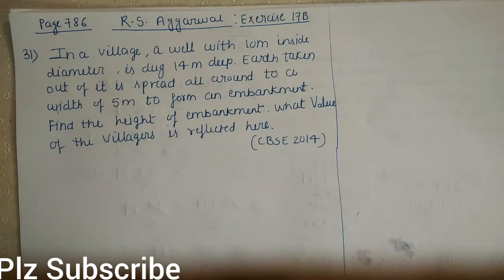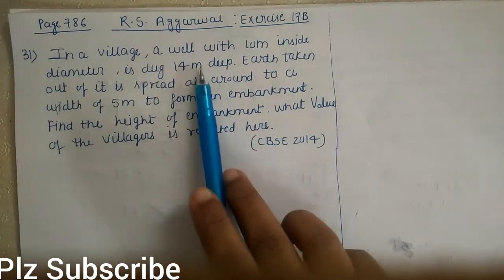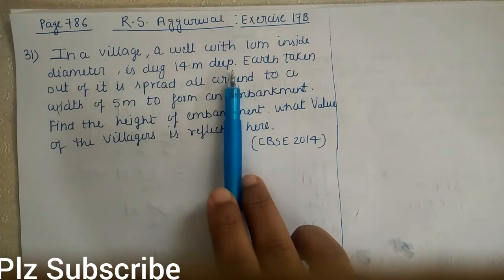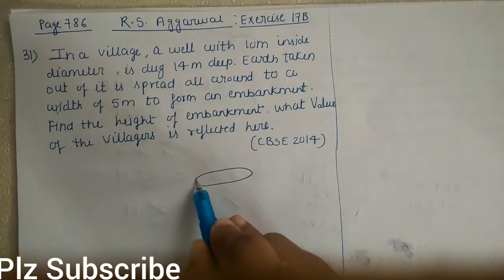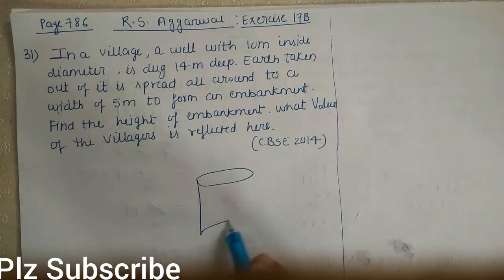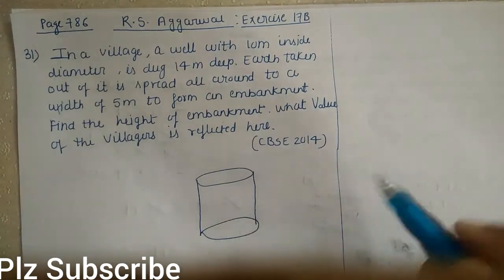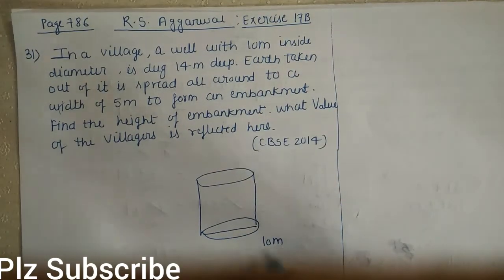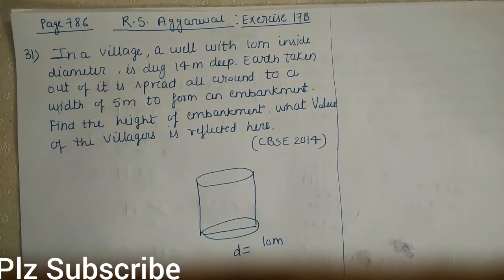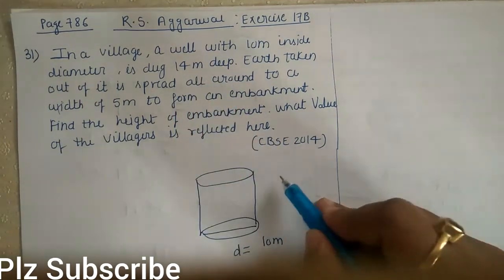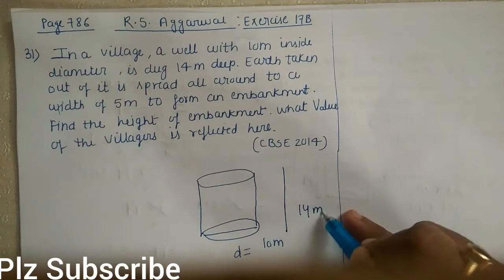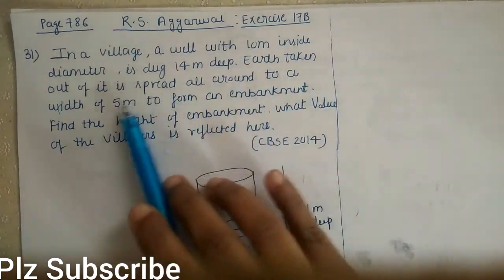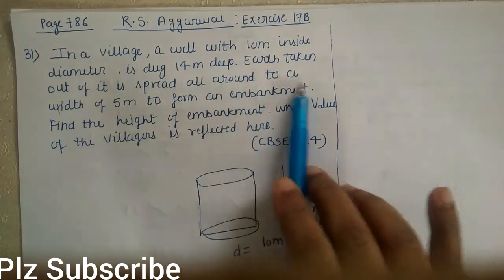Question number 31: In a village, a well with 10 meter inside diameter is dug 40 meter deep. So there is a well in a village, and the diameter of this well is 10 meter. It is dug 40 meter deep. The earth taken out of it is spread all around to a width of 5 meter to form an embankment.